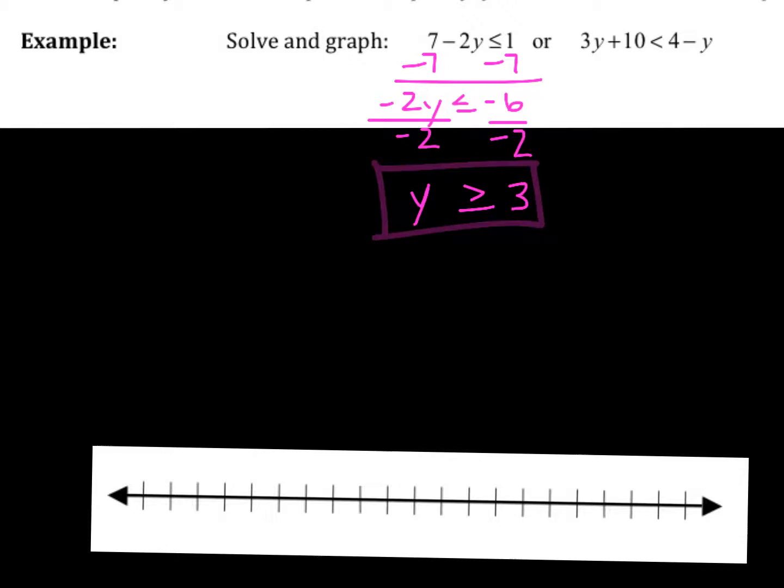And our second one, I'm going to first move that y over. So three plus really one y gives us 4y plus ten is less than four. Subtract the ten on both sides. Get 4y is less than negative six and divide both sides by four.